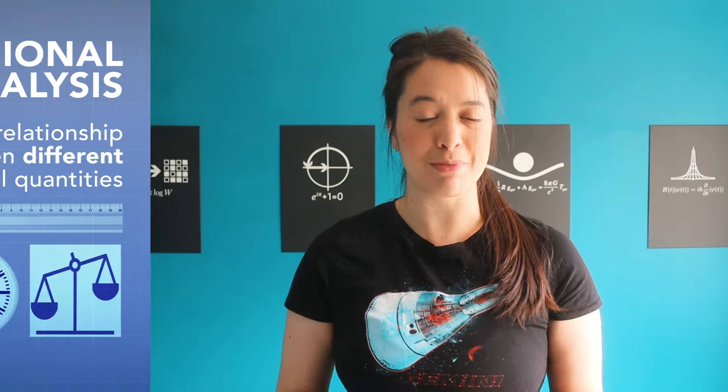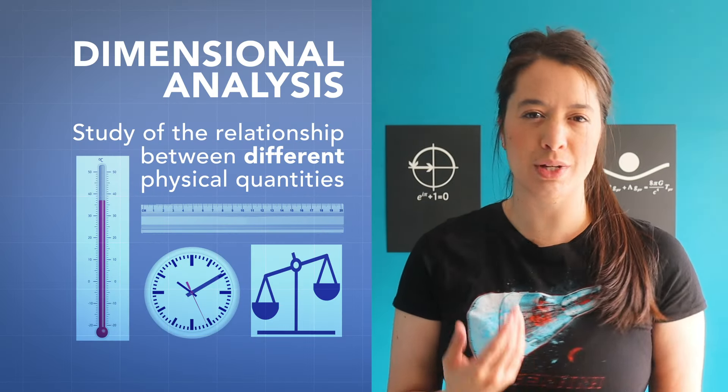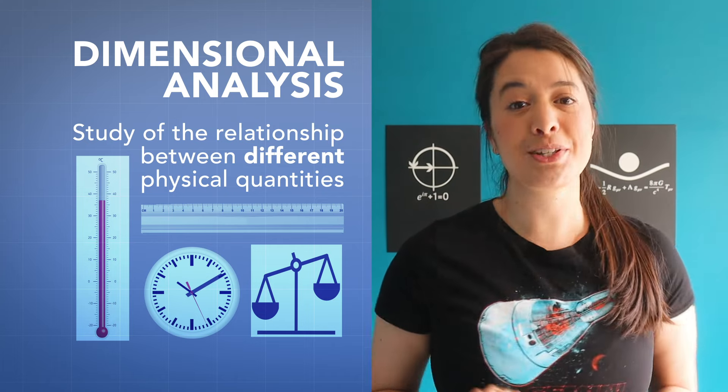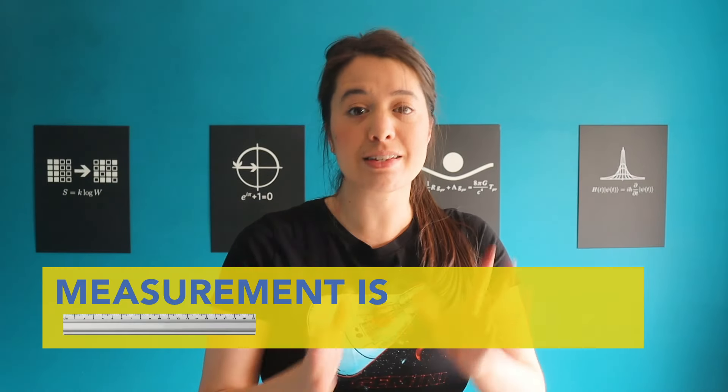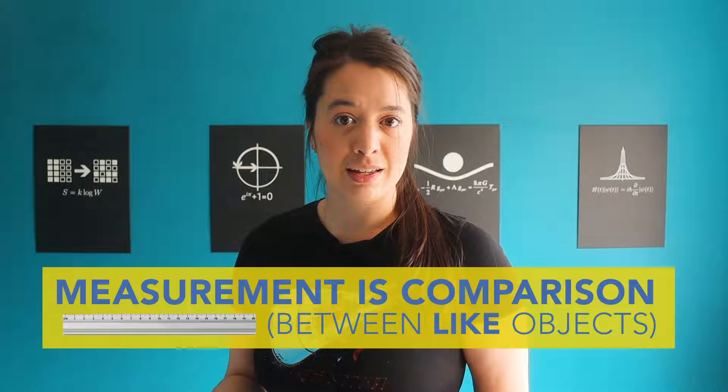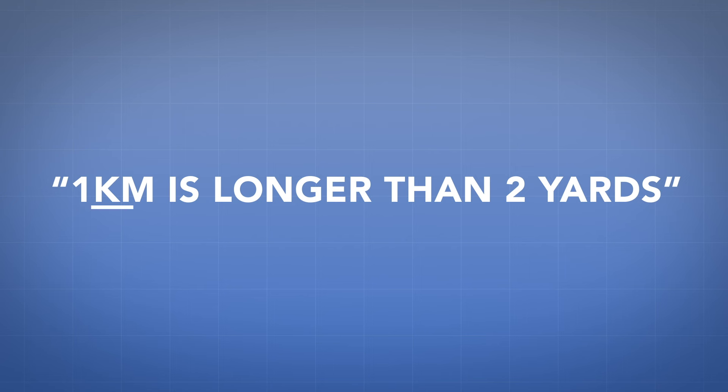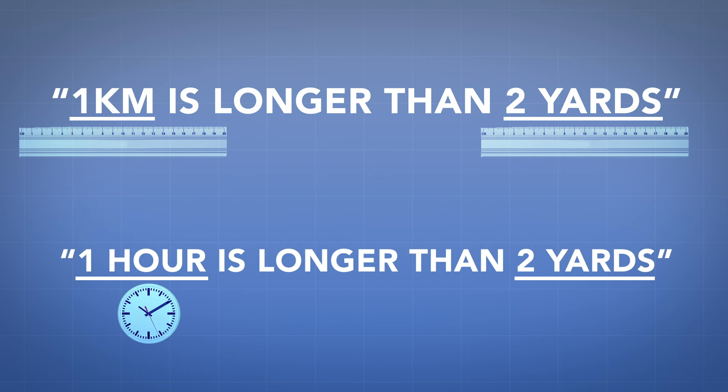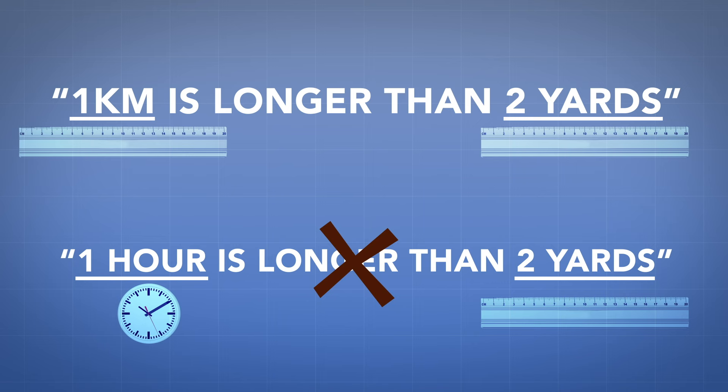If you did manage to answer, you've just undermined the entire field of dimensional analysis, the study of the relationship between different physical quantities. Its key principle is that measurement is comparison between like objects. This means that, one, absolute measurement doesn't exist, only relative measurement does, and two, for a measurement to be meaningful, it needs to be compared to something of a similar dimension. For example, saying that one kilometer is longer than two yards is fine because they're both measuring a length, but saying that one hour is longer than two yards doesn't mean anything because they're not measuring the same thing. Sounds obvious, but now let me ask you,